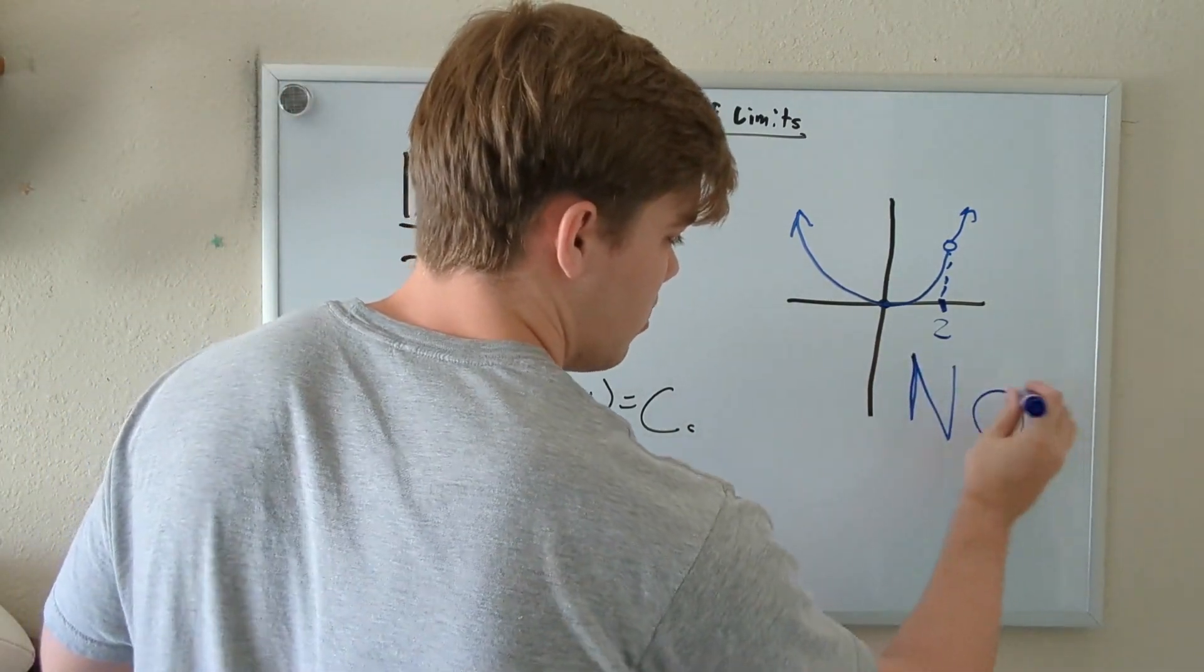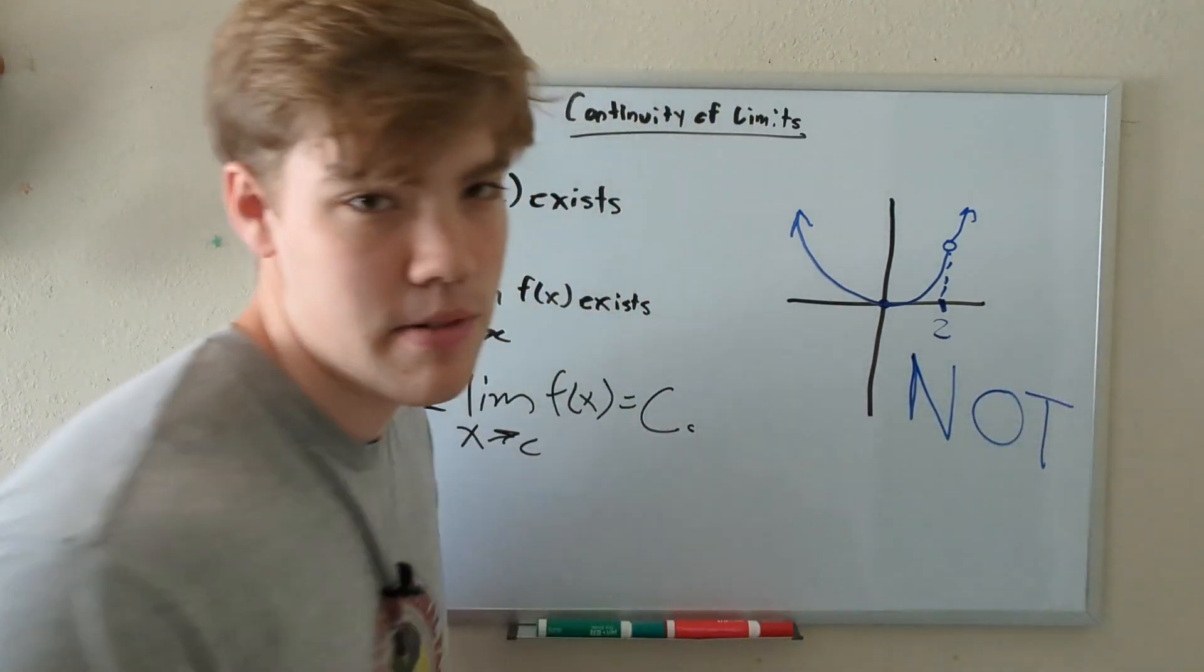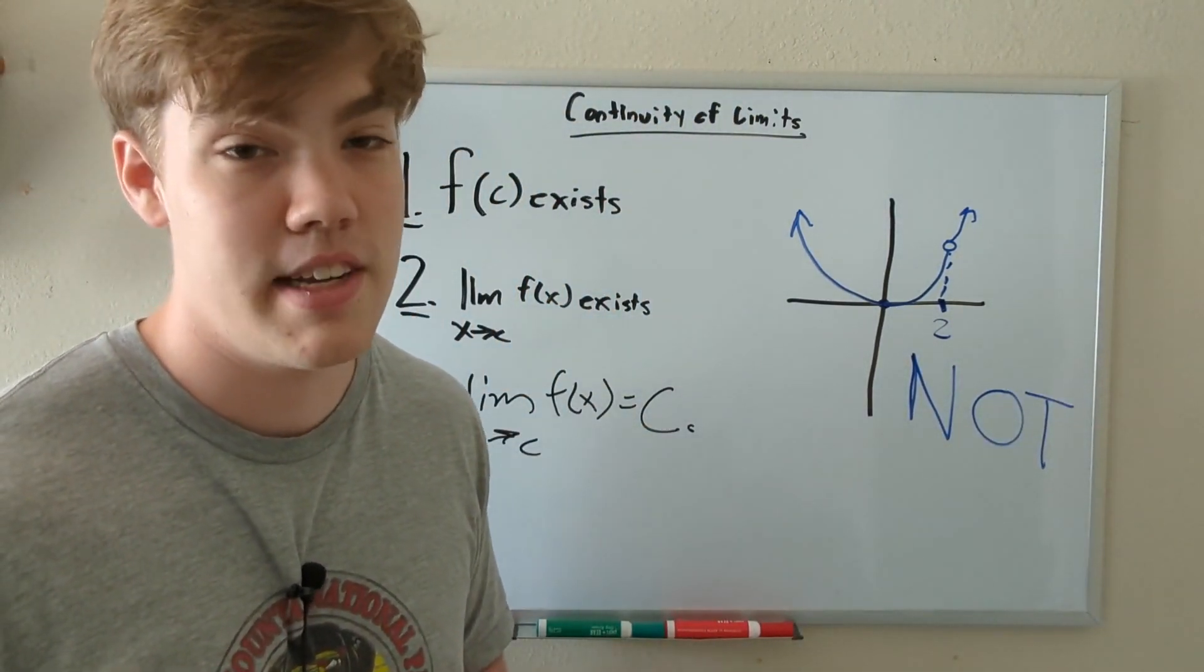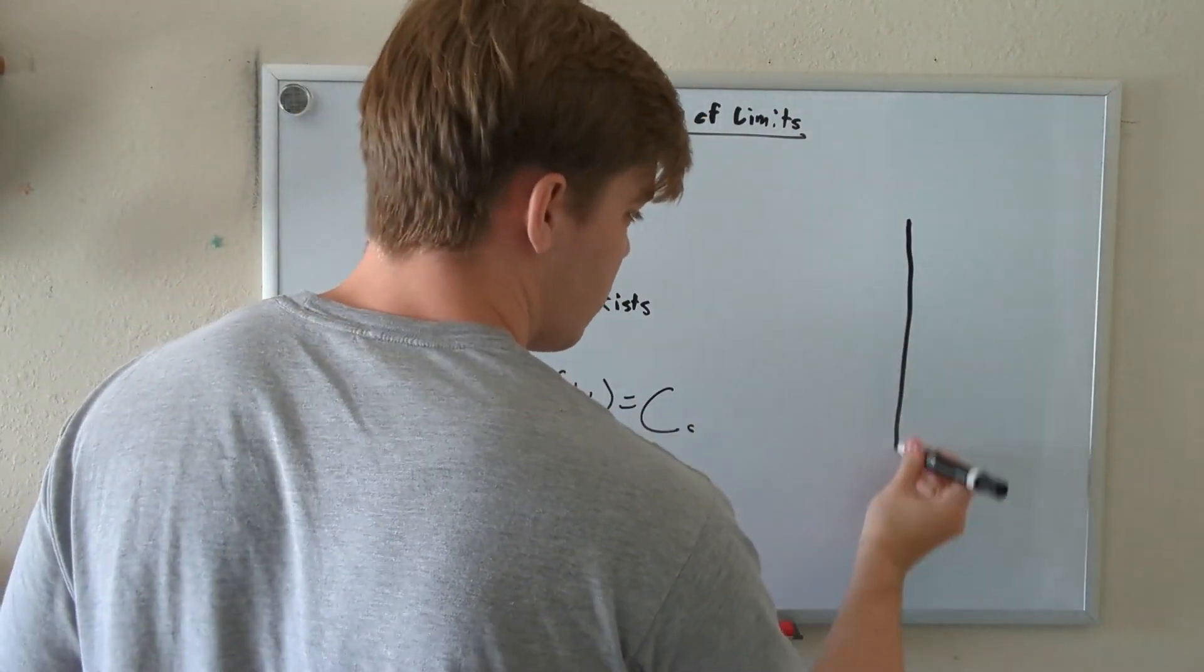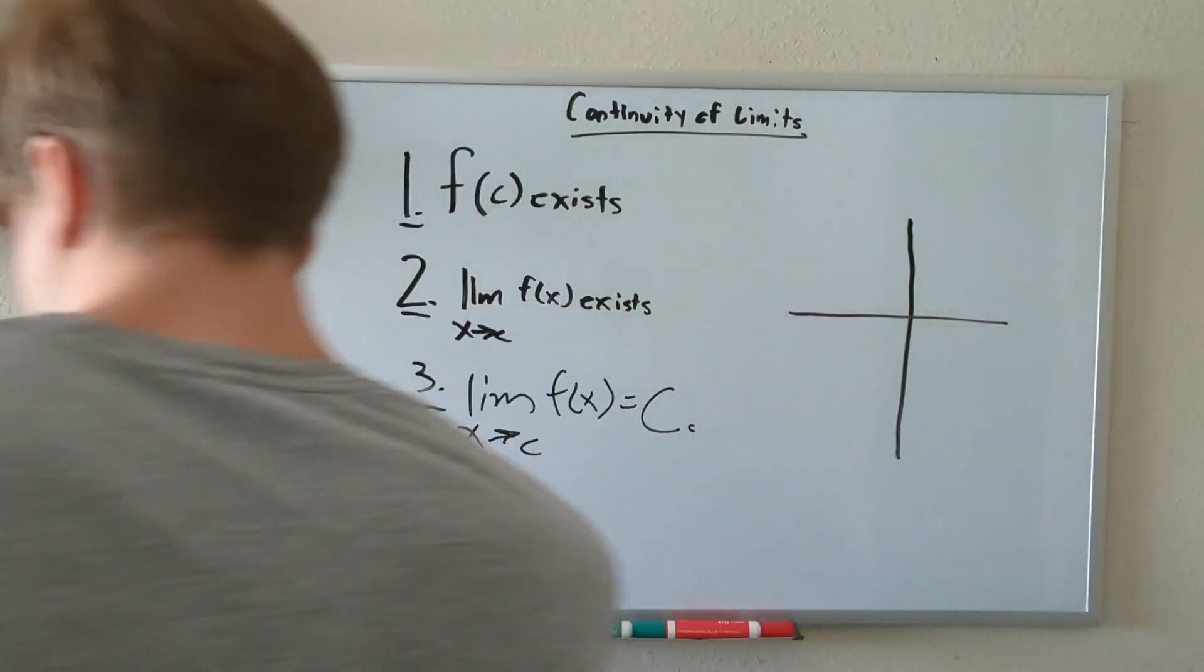We're going to write 'not' for not continuous. Continuous is a long word, and I don't want to write it down 15 billion times. Let's do another example. Let's draw our XY plane again. And we're going to draw this function.